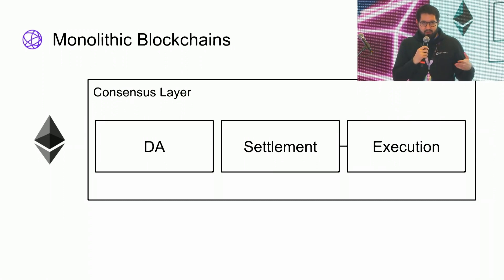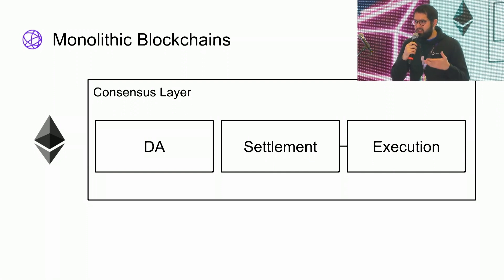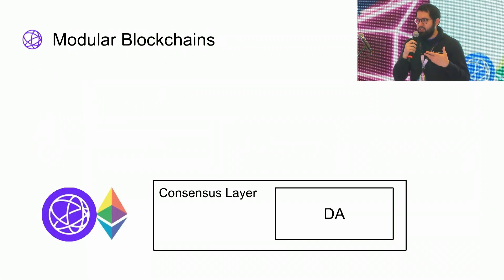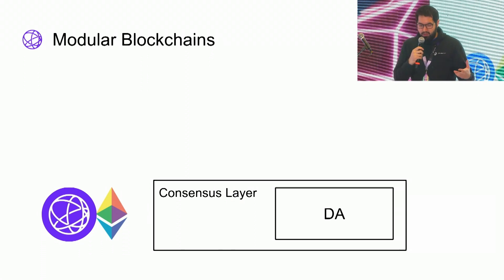The problem with this is that if you do all these things at the base layer, you're doing a bunch of work, and that work limits the capacity of the system — it limits the total throughput. This is why many blockchains are now moving towards the modular blockchain paradigm, for example Celestia and Ethereum 2.